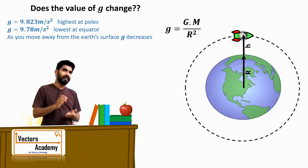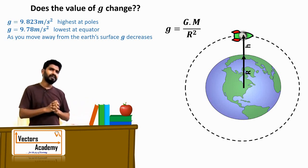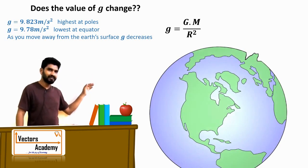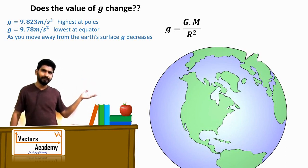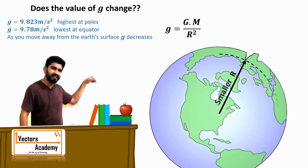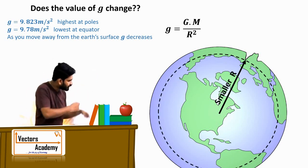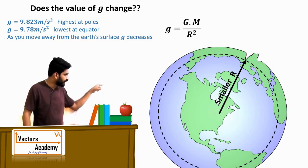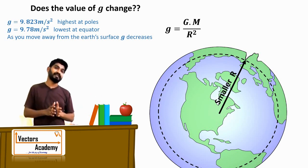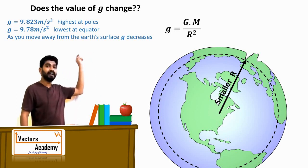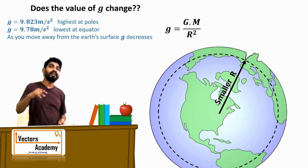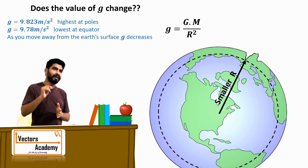What happens if we go inside the earth? The earth's surface is not flat — we have mountains and valleys. If you go inside the earth's crust, the distance of that point from the center of the earth decreases, so the value of r decreases in the formula. One might expect the value of g to increase, but actually it doesn't — let us see why.